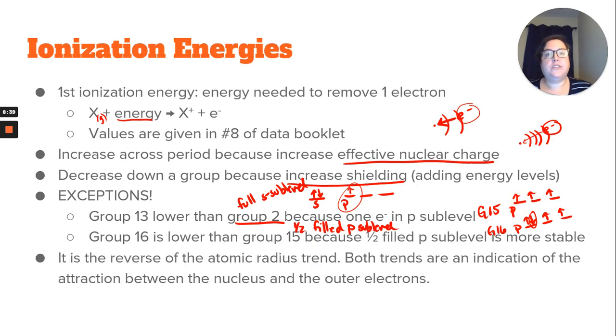It is the reverse of the trend. So if we're just looking at the periodic table, we would say that the lower left is larger. So we're increasing atomic radius towards the lower left. But for ionization energy, the lower left is lower ionization energy. So it decreases towards the left.